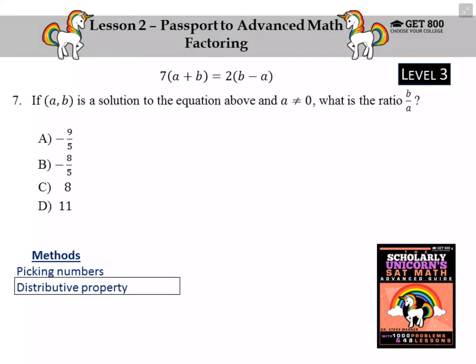This is Lesson 2, Question 7 from the Scholarly Unicorns SAT Math Advanced Guide. If AB is a solution to the equation above and A is not 0, what is the ratio B over A?